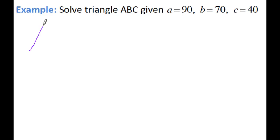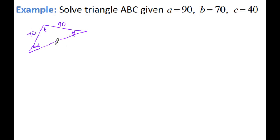Now we have this triangle. We don't have any angles, so we're missing alpha, beta, and gamma — we're going to have to solve for all three. Side A is 90, side B is 70, and side C is 40. When using law of cosines to solve for an angle, you need to start with the largest angle first. The largest angle is opposite the largest side, so we're going to be solving for alpha. The side always starts off the formula.